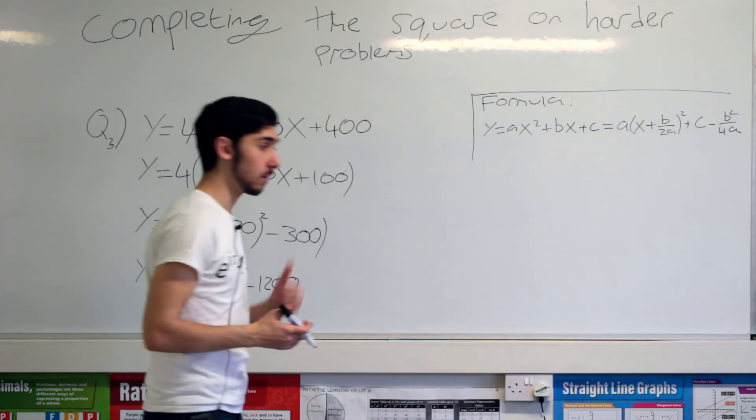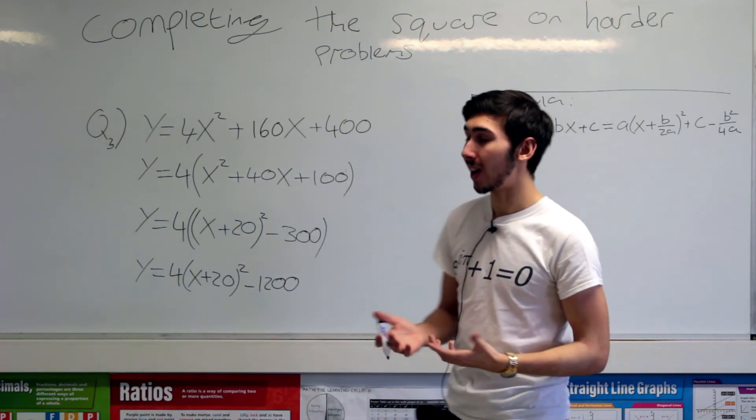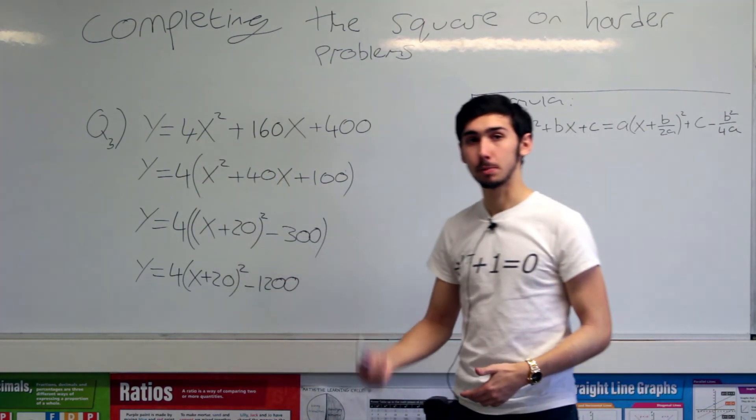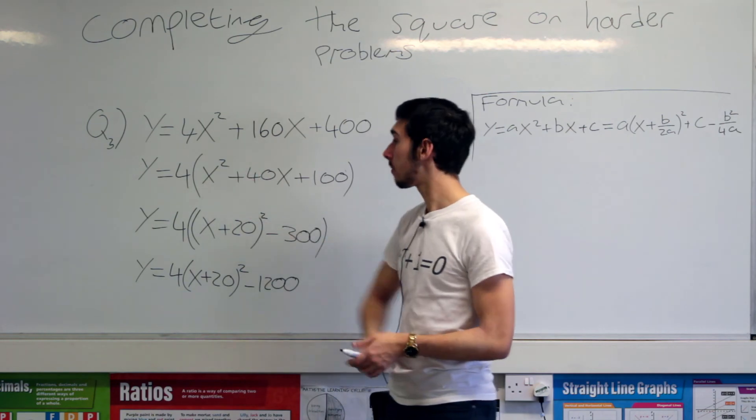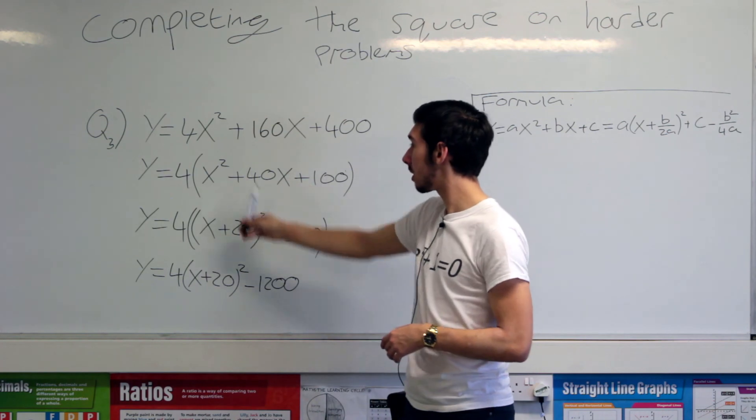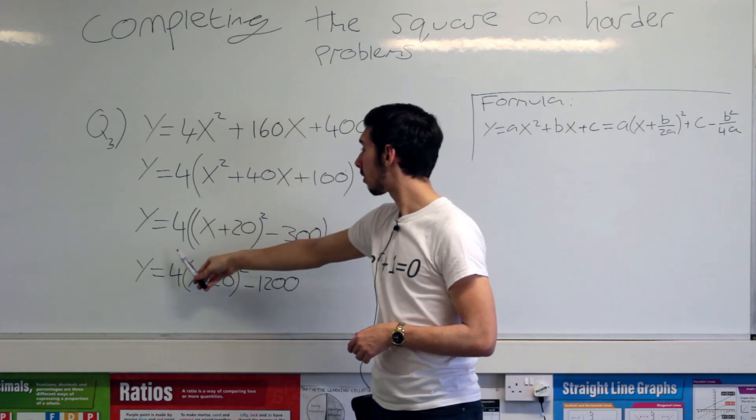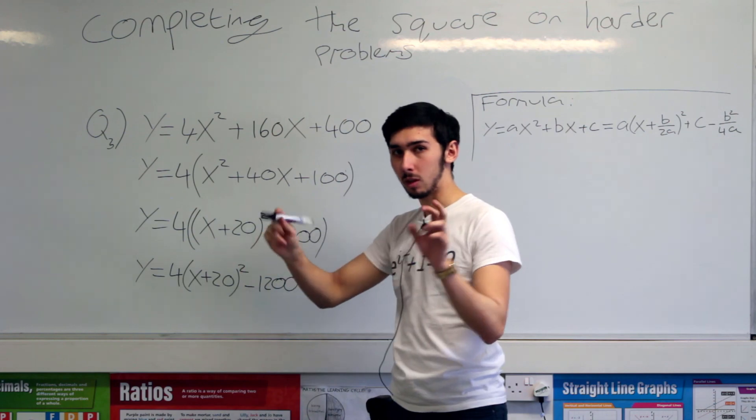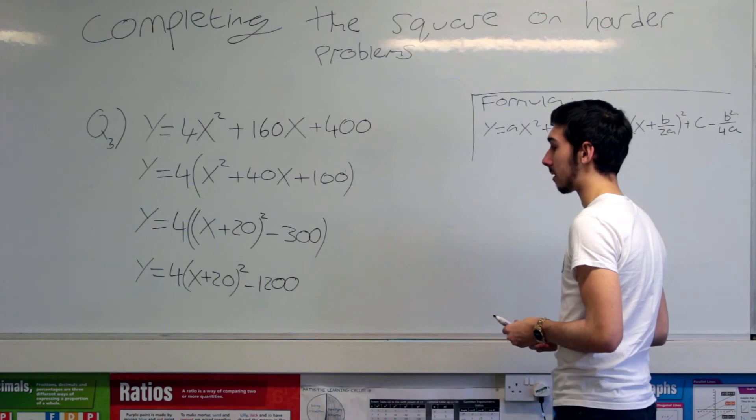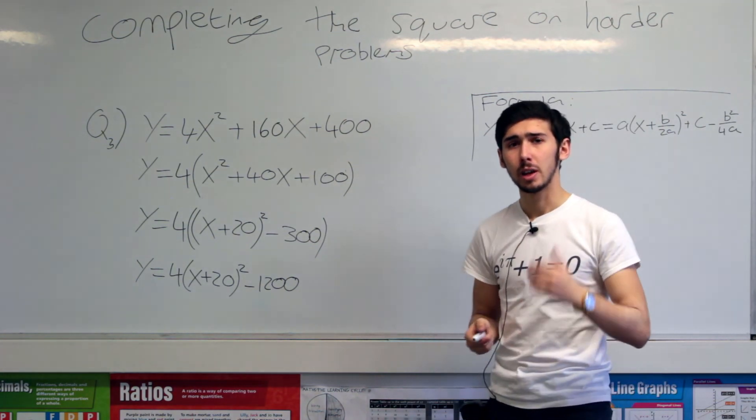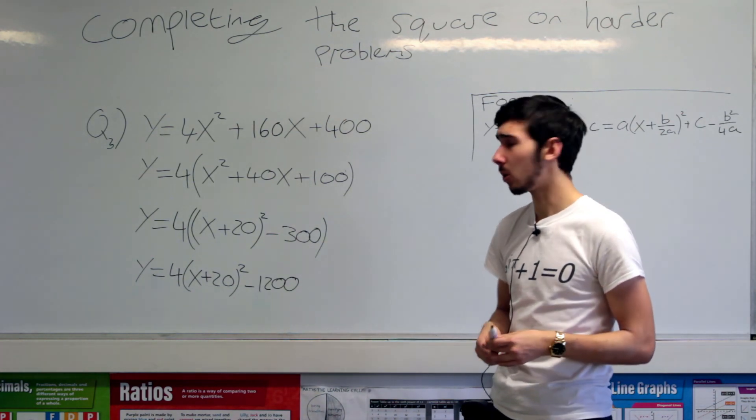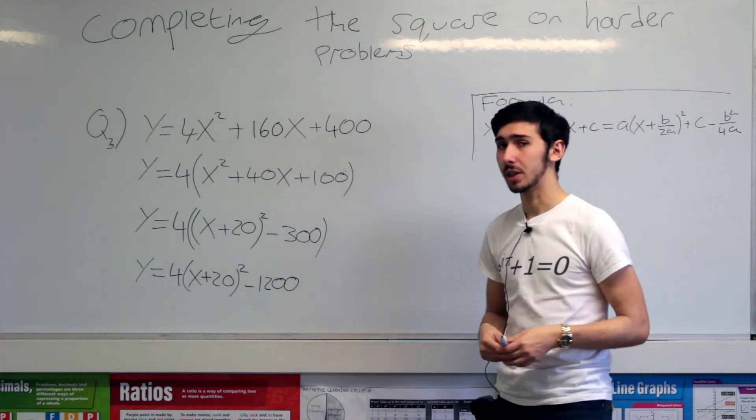So the way that you complete the square on functions of the form ax squared plus bx plus c when a is not one is factor it out and then complete the square on what's left inside and then re-expand back out and you will get that. I hope that made sense. I hope it was good stuff. If you enjoyed the video, please like subscribe, share with your friends and math cohorts. And I will see you guys in the next video.